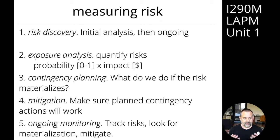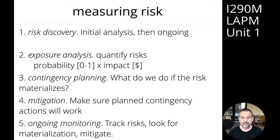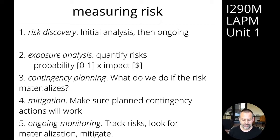Mitigation means making sure that the planned contingency actions will work. Then you have to do ongoing monitoring — you have to track those risks, look for materialization, and mitigate risks if they do actually materialize. You've also got to continue to discover new risks, because risks will definitely change over the life cycle of your product. So you've got to continue to find new ones and update your estimates and plans on an ongoing basis.